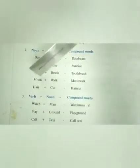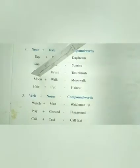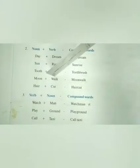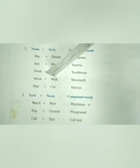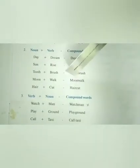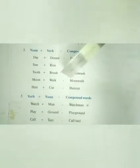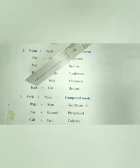Another noun plus verb example: 'sun' noun plus 'rise' verb gives us 'sunrise'. Also, 'moon' noun plus 'walk' — action word, verb — gives us 'moonwalk'.